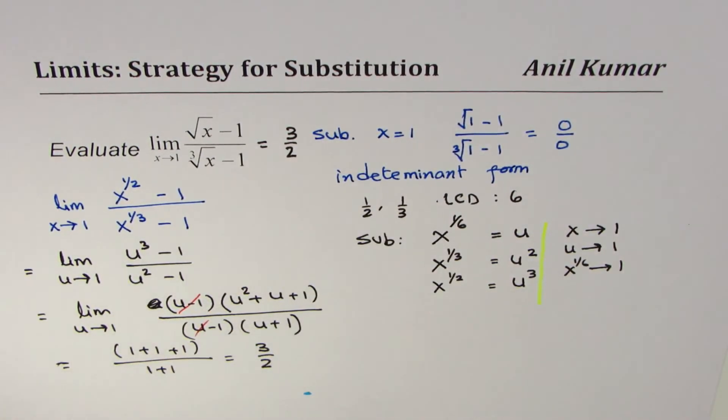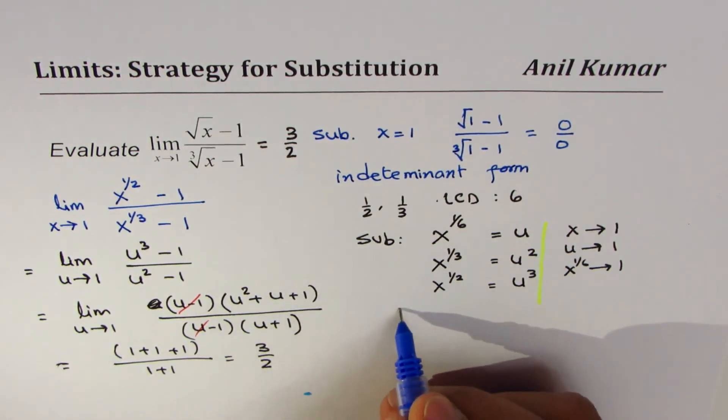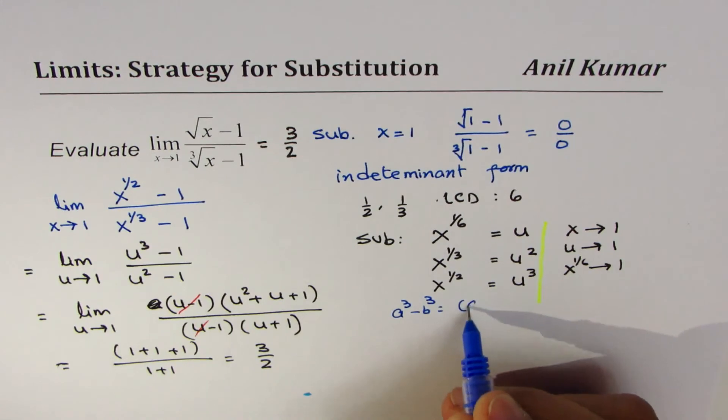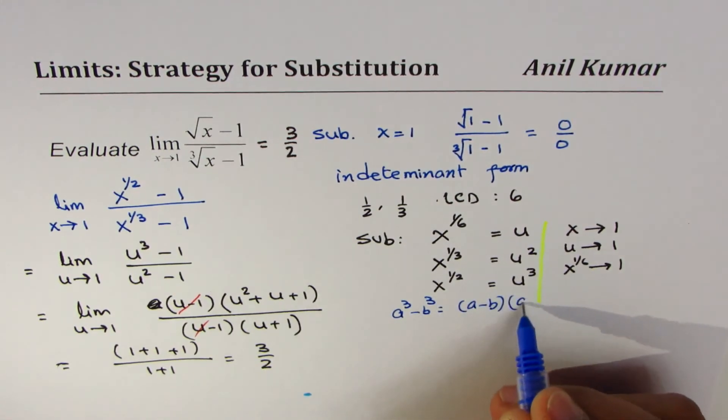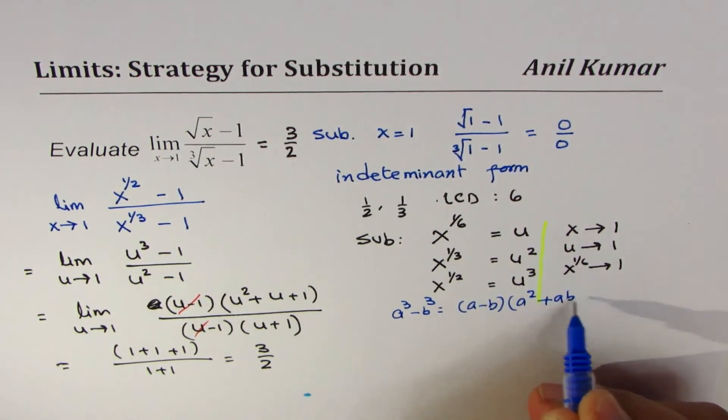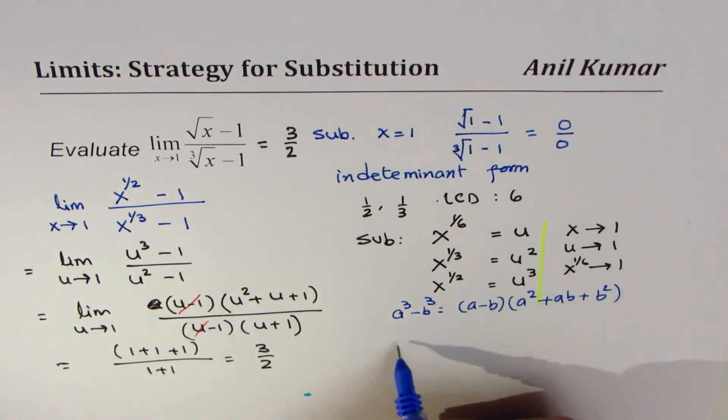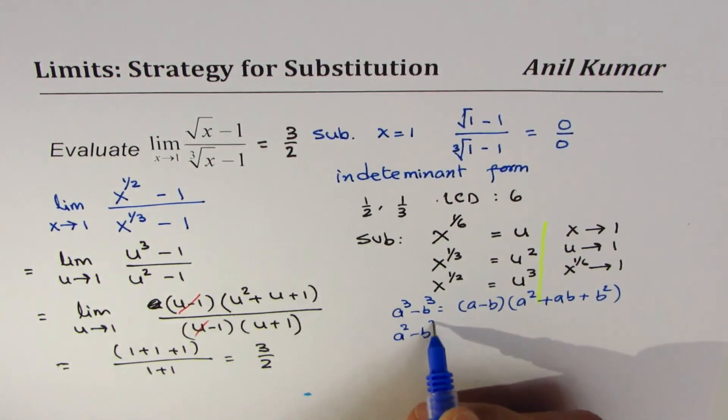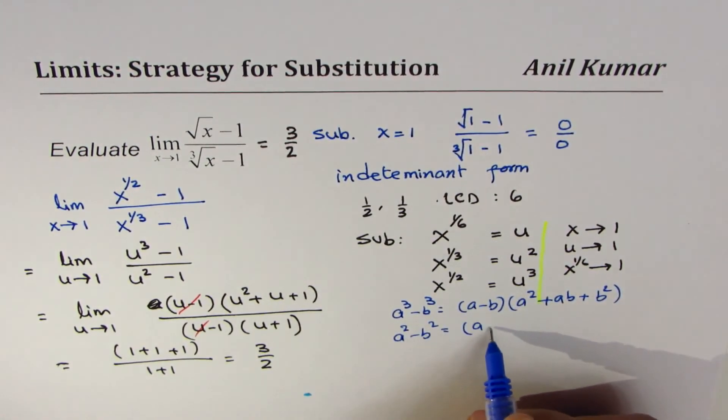The two formulas which we have used here, let me write them down. Very important to remember: a cubed minus b cubed is a minus b times a squared plus ab plus b squared, and a squared minus b squared is a minus b times a plus b.